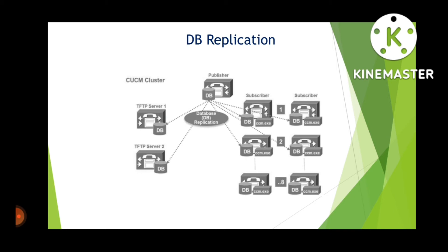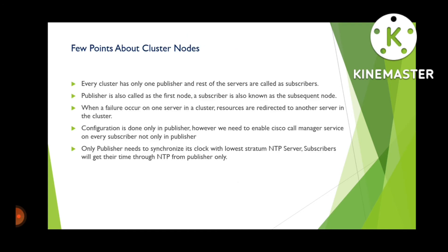A standard cluster supports up to 30,000 phones, while a super cluster or mega cluster supports more than 30,000 phones. One server in the cluster supports up to 7,500 to 10,500 phones. For a super cluster deployment, BAU approval from Cisco is required. Database replication happens from the publisher to all subscribers in the cluster. Configuration is only done on the publisher and it reflects to all subscribers. Only the publisher needs to synchronize with an NTP server, and that time is replicated to all subscribers.